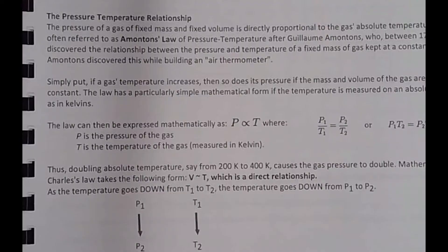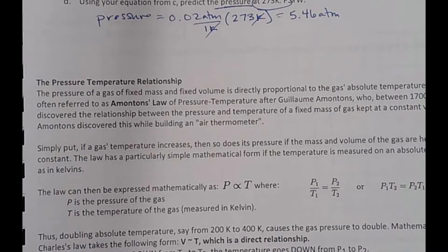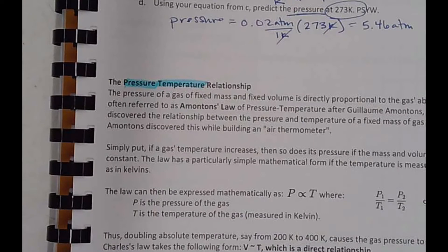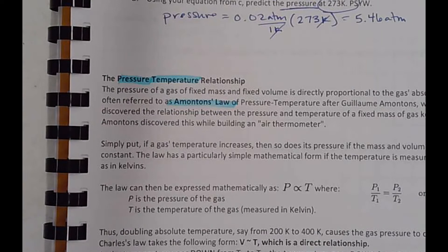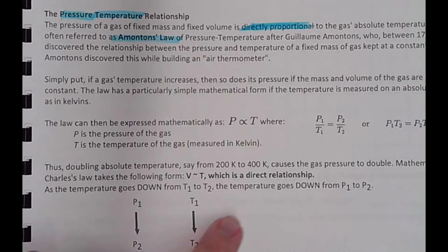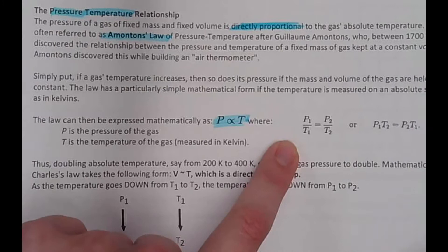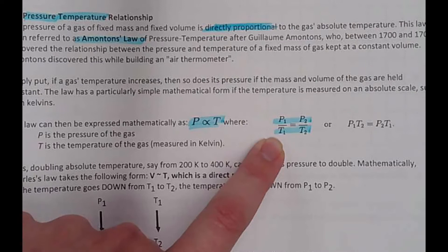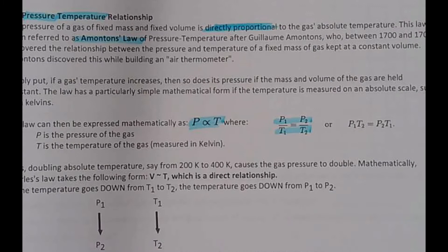Today we're going to complete these practice problems, which are similar to yesterday's Boyle's Law problems. The difference is that instead of pressure and volume, Amontons' Law is pressure and temperature. What we found in the lab was that they're directly proportional — if one goes up, the other goes up as well. In an expression: pressure is proportional to temperature.